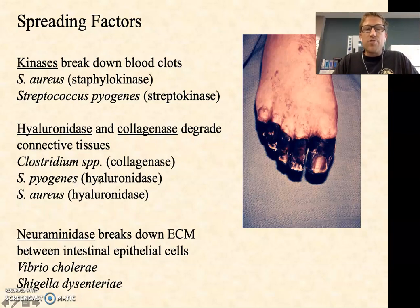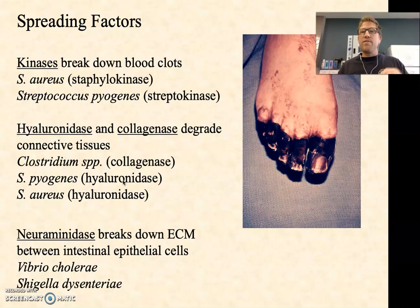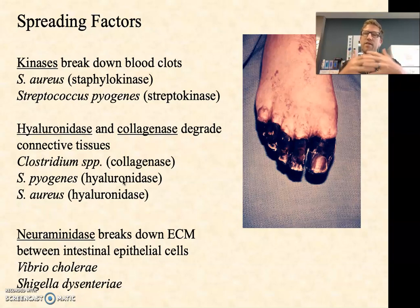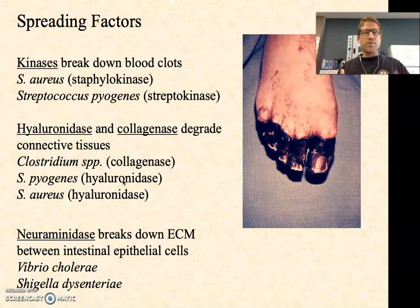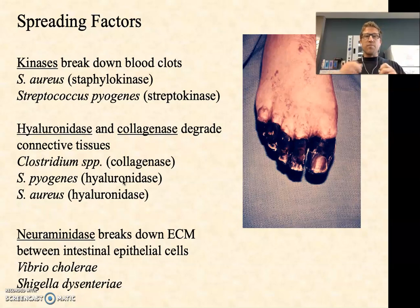Gas gangrene occurs when the infection is so aggressive that you can actually see bubbles forming in the tissue as fermentation byproducts. Clostridium perfringens, for example, can carry collagenase. Some strains of group A strep carry hyaluronidase, as can some strains of Staph aureus, though far less commonly. Neuraminidases are interesting because they appear in both viruses and bacteria. Influenza carries neuraminidase; in bacteria, Vibrio cholerae and Shigella dysenteriae use neuraminidase to break down the extracellular matrix of intestinal epithelial cells, contributing to severe dysentery.